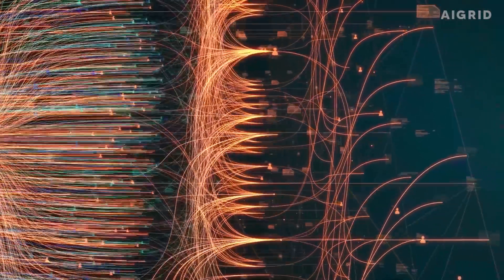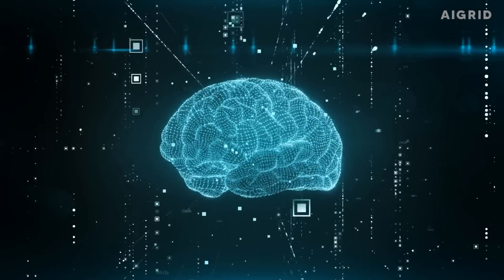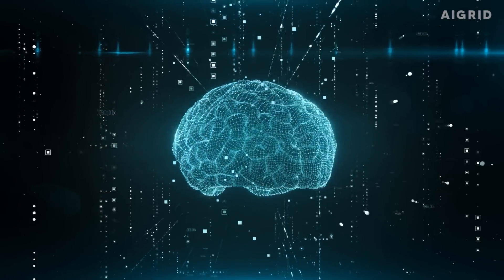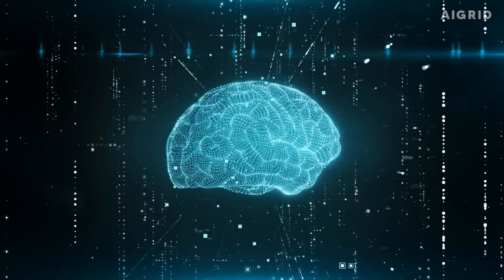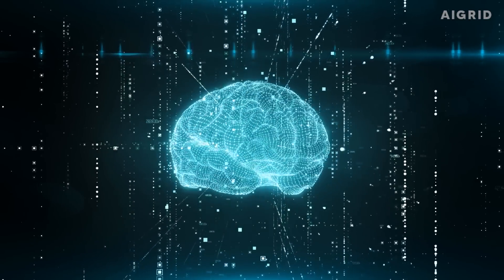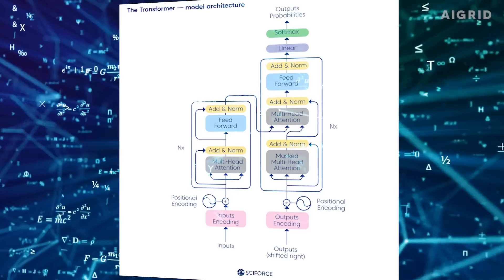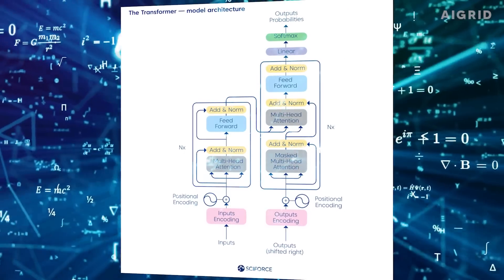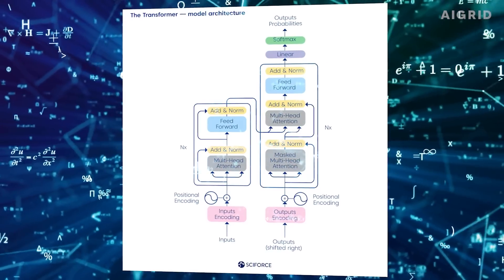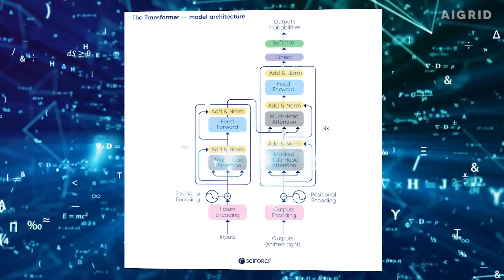The transformer algorithm is built on a neural network, which is a class of software optimized to imitate how the human brain works. The transformer algorithm can analyze and interpret huge amounts of data. The knowledge is then used to generate text that sounds like human speech.